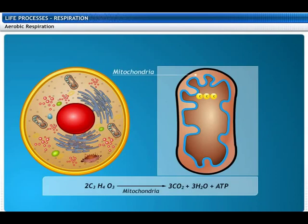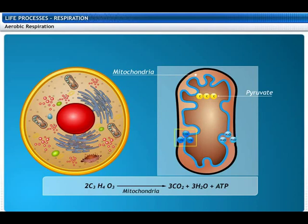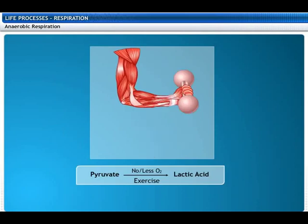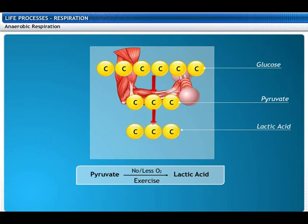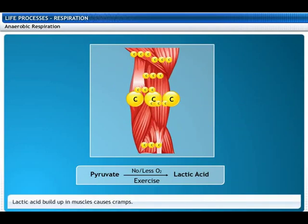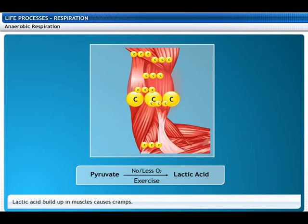In aerobic organisms, the pyruvate molecule is further broken down in the mitochondria. The three-carbon pyruvate is broken down into three molecules of carbon dioxide and three molecules of water. Sometimes our muscle cells may not have enough oxygen; in this case, pyruvate molecules are broken down anaerobically and converted into lactic acid, which is also a three-carbon molecule. This lactic acid builds up in our muscle cells and causes cramps.